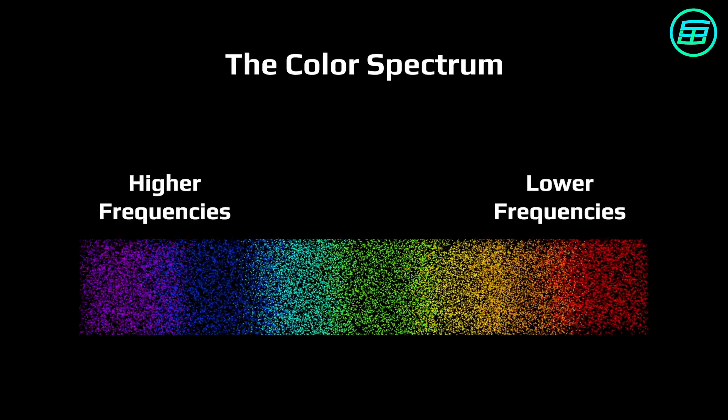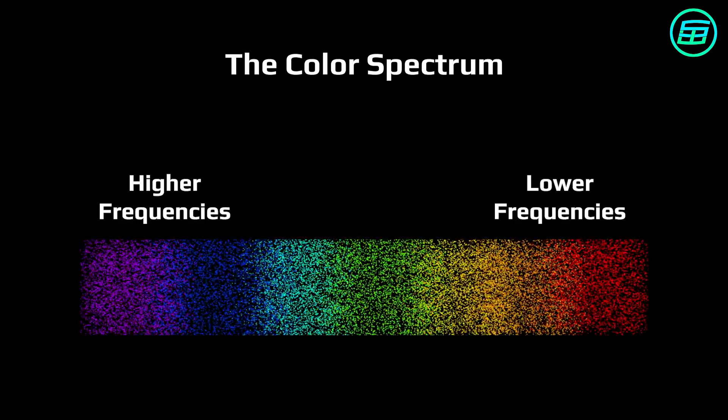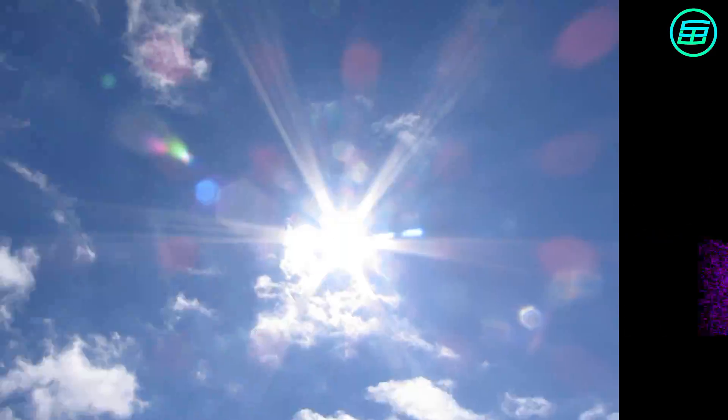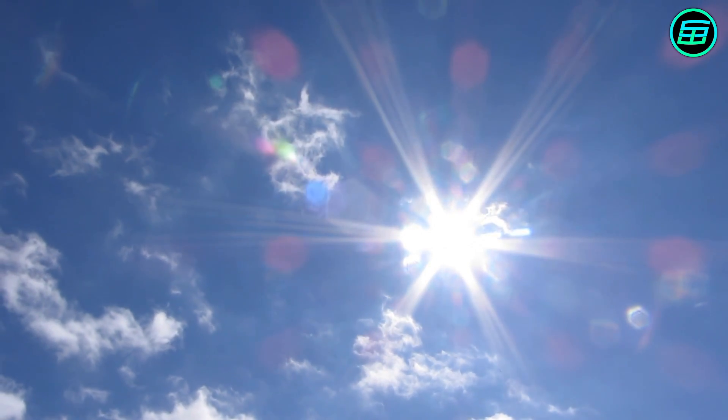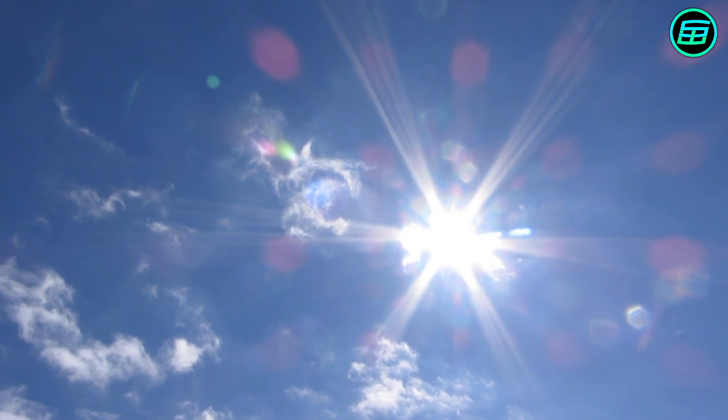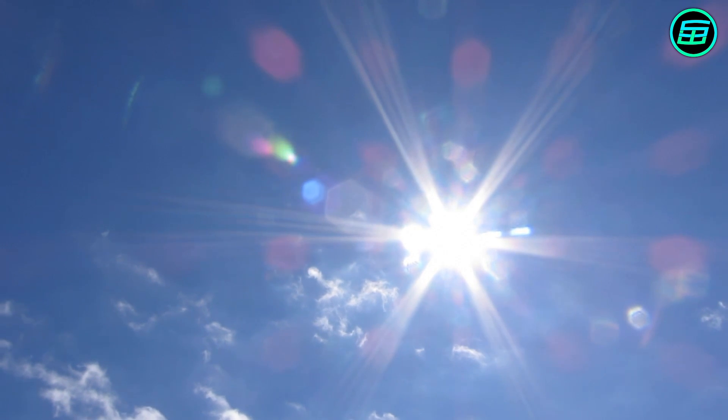Sunlight reaches the Earth and strikes all the materials in its path. Atoms in matter reflect, absorb, or transmit the incoming sunlight depending on its energy.